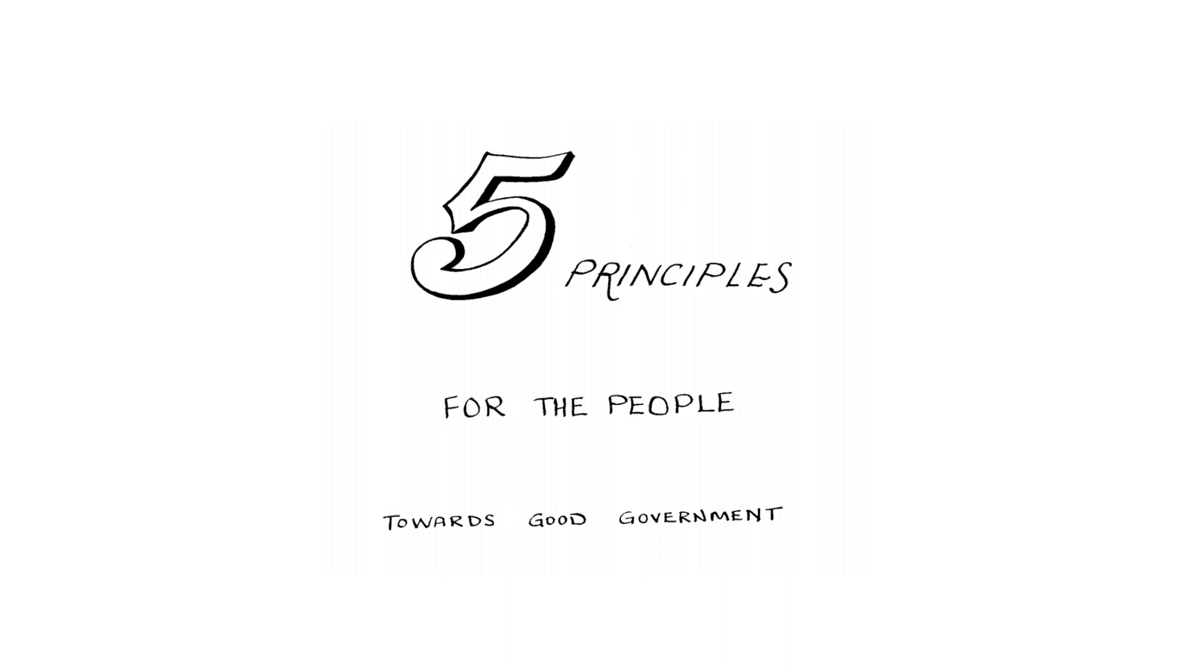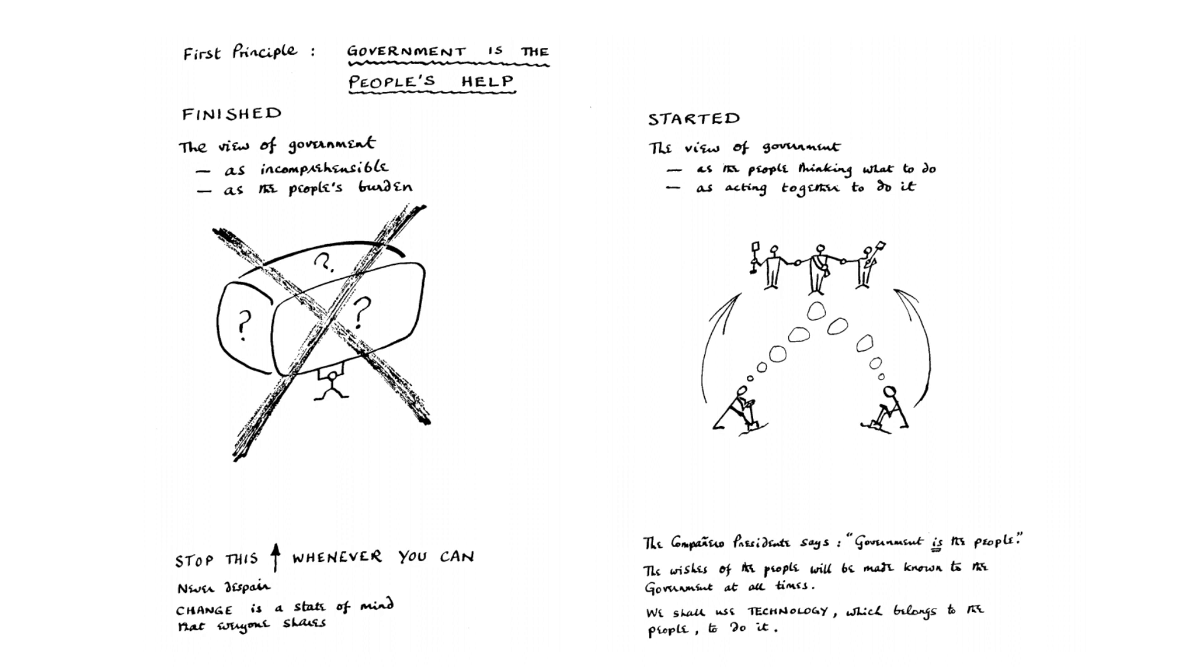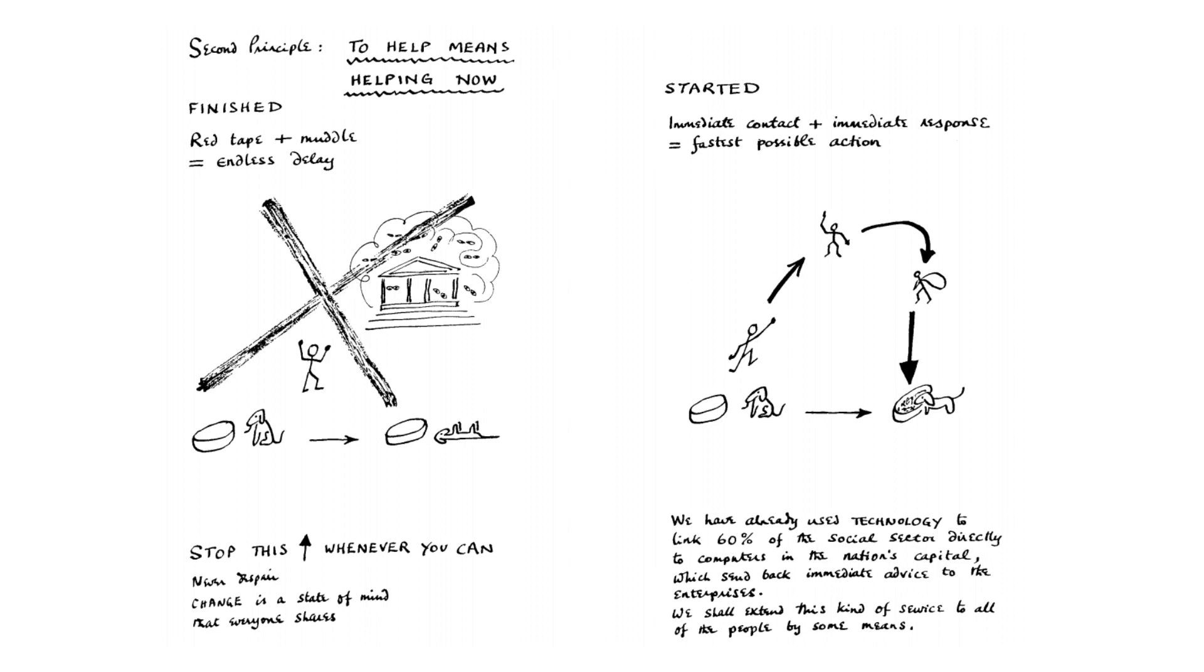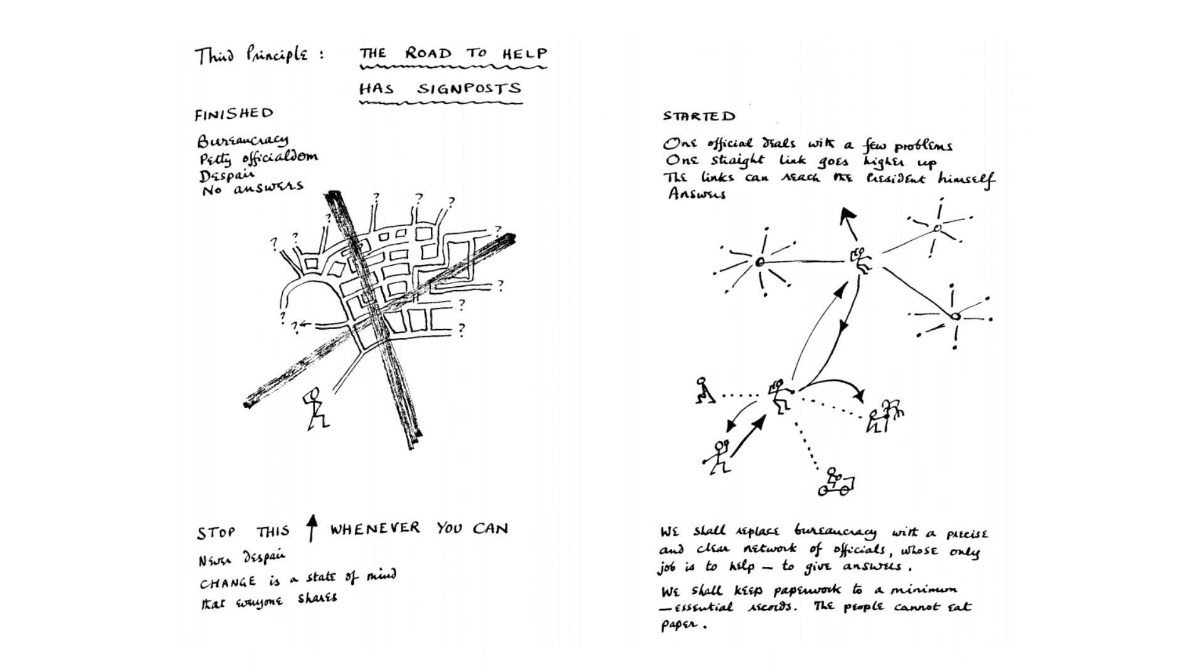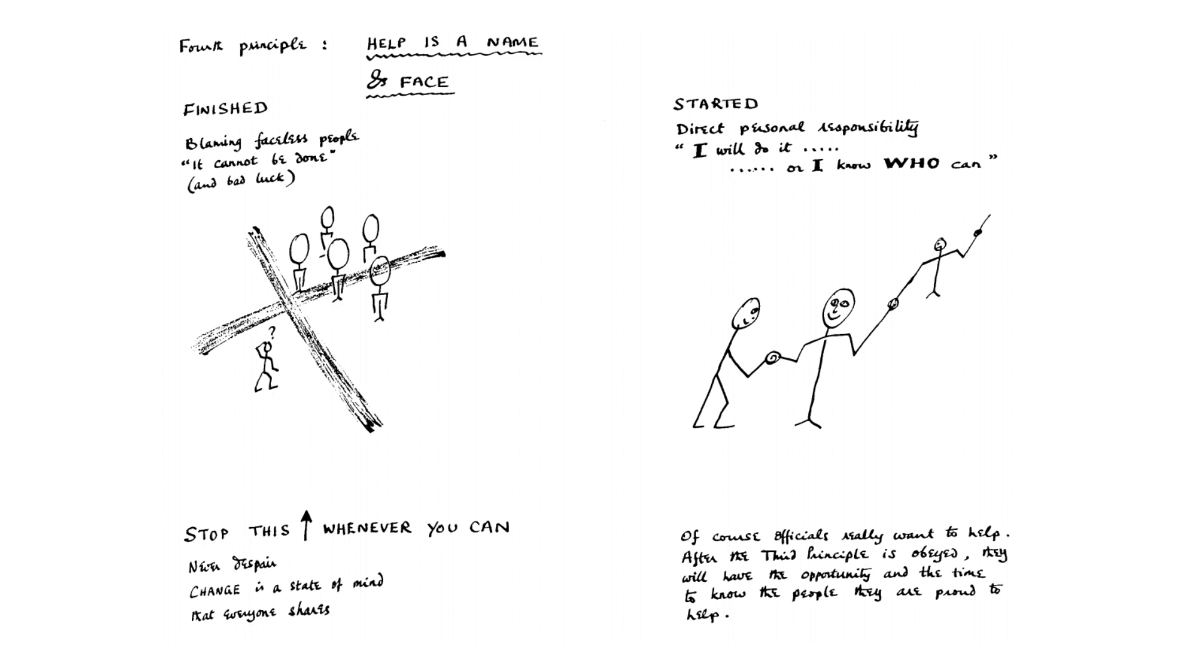The five statements were: 1. The government is the people's help. 2. To help means to help now. 3. The road to help has signposts. 4. Help is a name and a face. 5. The future starts today.